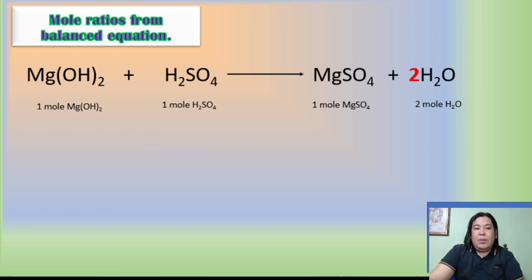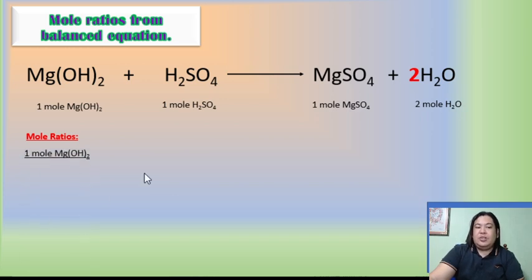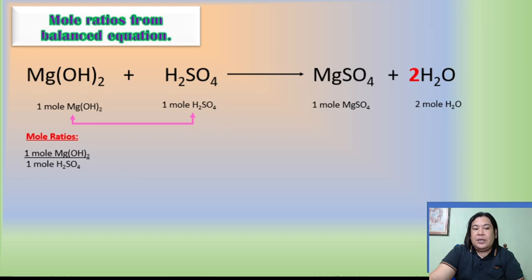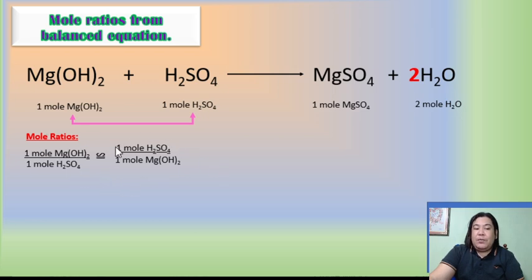How to construct a mole ratio from a balanced equation: since the first chemical formula on the reactant side is magnesium hydroxide, you write one mole of magnesium hydroxide and pair it with sulfuric acid. So for every one mole of magnesium hydroxide, there is one mole of sulfuric acid. This ratio — one mole Mg(OH)₂ over one mole H₂SO₄ — is stoichiometrically equivalent to its reciprocal, one mole H₂SO₄ over one mole Mg(OH)₂.